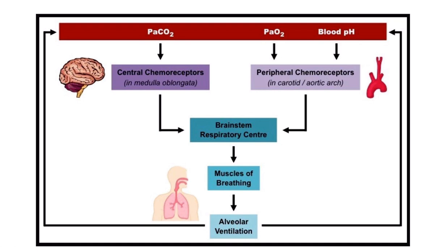Looking at the figure, the central chemoreceptor is located in the medulla oblongata, which is a brain structure. The central chemoreceptor is sensitive to the partial pressure of carbon dioxide, but is actually responsive to hydrogen ion concentration, because carbon dioxide ultimately generates hydrogen ions, and these hydrogen ions stimulate or inhibit the central chemoreceptor.